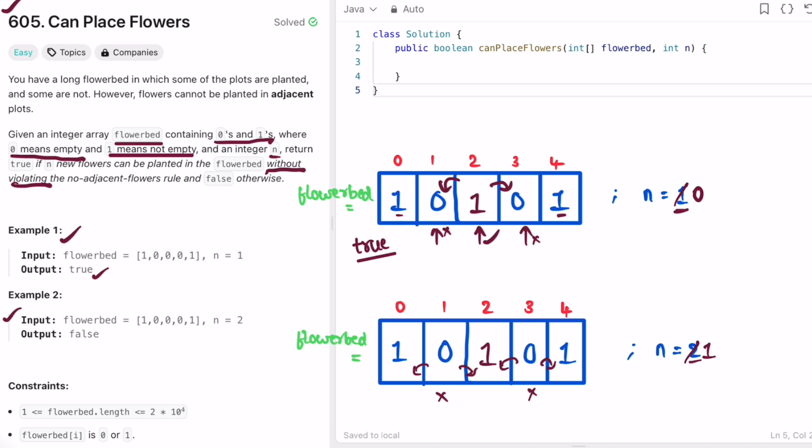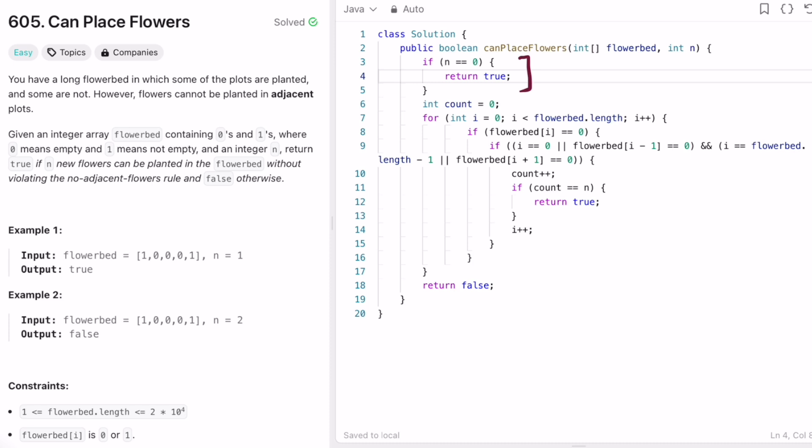Since there is no way we can place the n new flowers, we return false as output. Now let's implement these steps in a Java program. So here I'm making a base check that if n is equal to zero, if no new flowers are needed to be placed, we return true as there is no need to change the flowerbed input.